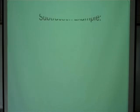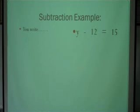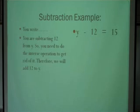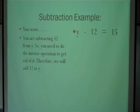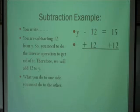Let's try subtraction. You write Y minus 12 equals 15. You're subtracting 12 from Y, so you need to do the inverse operation to get rid of it. Therefore, you will add 12 to Y. And don't forget — what you do to one side, you must do to the other.